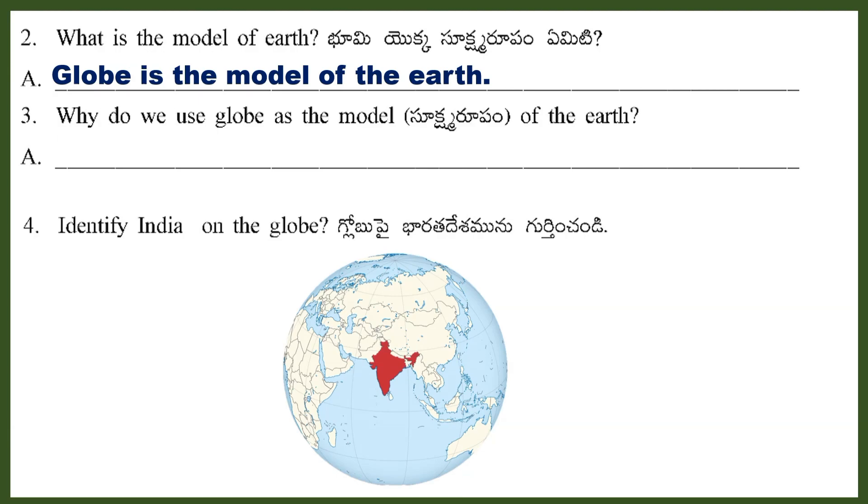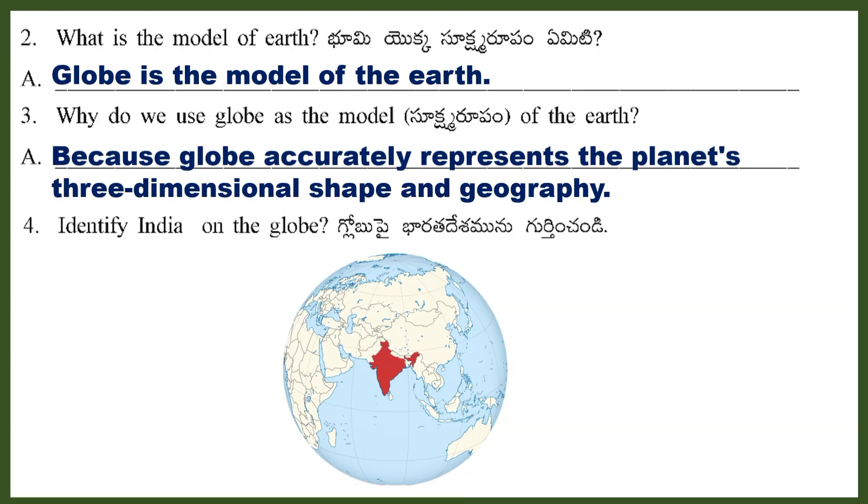Question 3: Why do we use globe as the model of the Earth? Answer: Because globe accurately represents the planet's three-dimensional shape and geography.